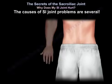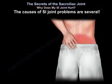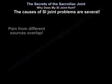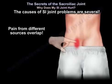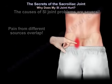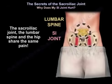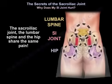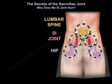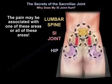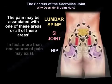The causes of SI joint problems are several. Pain from different sources overlaps — the sacroiliac joint, the lumbar spine, and the hip share the same pain. Pain may be associated with one of these areas or all of these areas. In fact, more than one source of pain may exist.